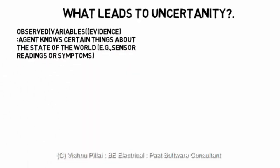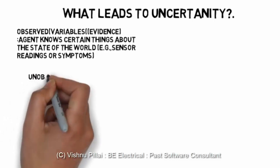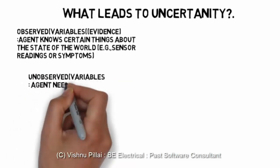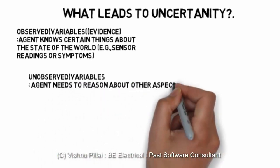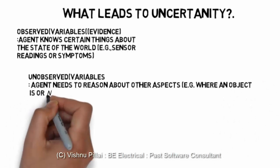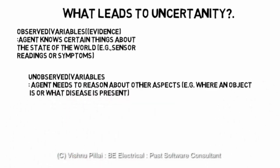Sometimes it may be necessary to have a reasoning ability under uncertainty. An observed variable is the variable evidence the agent knows about the state of the world — for example, sensor readings or symptoms. Unobserved variables are what the agent needs to reason about, such as where an object is or what is present.